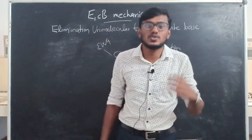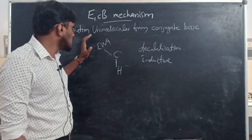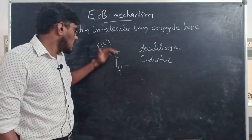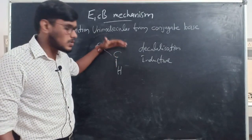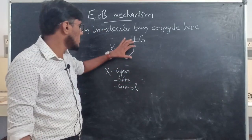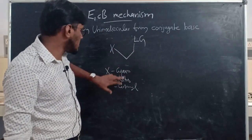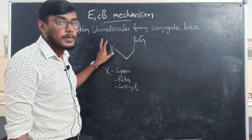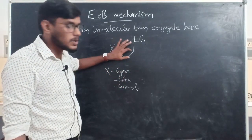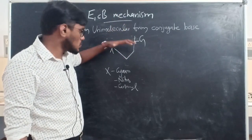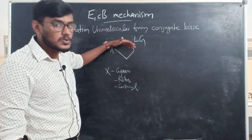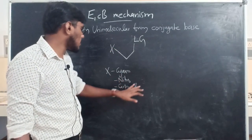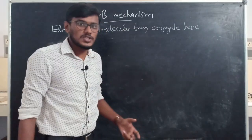Simple alkyl halides or sulfonates do not undergo E1CB reactions. The electron-withdrawing group increases the Brønsted acidity, so the proton can be easily removed, forming the carbanion intermediate. When the leaving group is beta to groups such as cyano group, nitro group, or carbonyl group, E1CB mechanism is favored because the carbanion formed is stabilized by these groups. In the next step the leaving group leaves, forming the product.